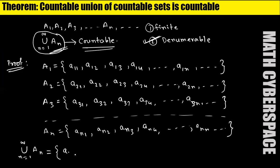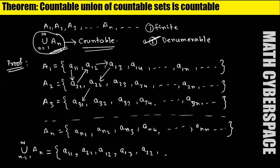So first we write the first element a11 — the sum of the index elements is 1+1=2. Now I am collecting those elements where the sum of the index elements is 3. So the elements will be a21 and a12. Then collecting elements whose sum of indices is 4: the elements will be a13, a22, and a31.